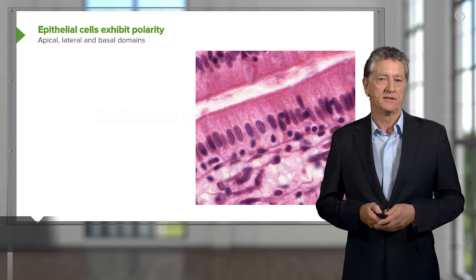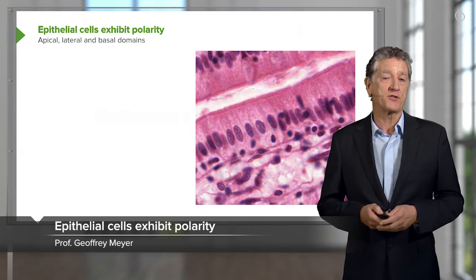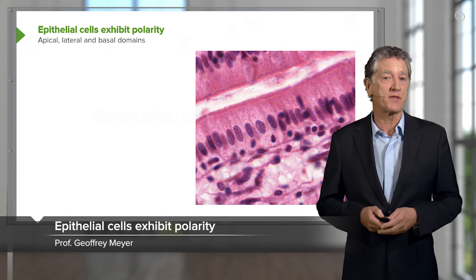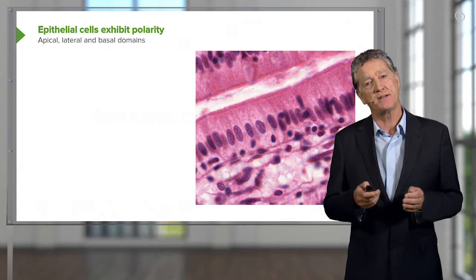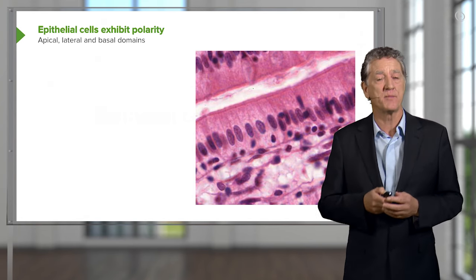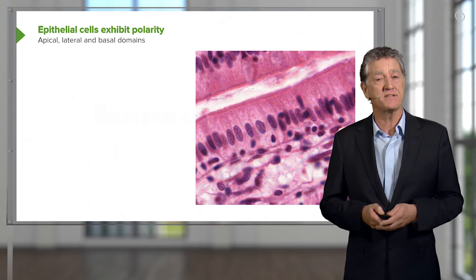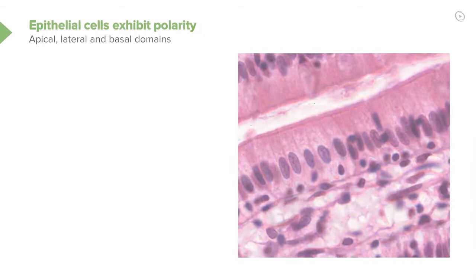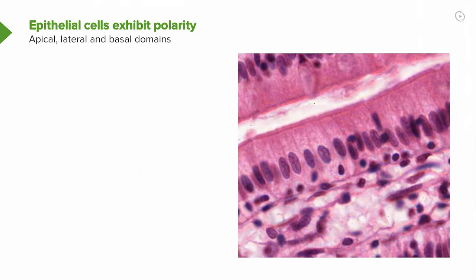I mentioned earlier that epithelial cells have three characteristics: an apex, a lateral border, and they sit on a basement membrane. These cells have polarity. Epithelial cells exhibit polarity, meaning they have apical surfaces or apical domains, lateral domains, and basal domains.